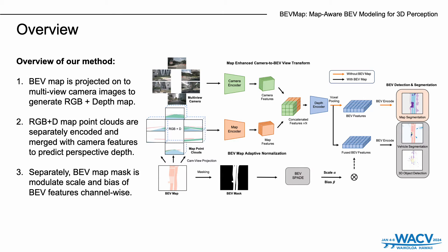We introduce the overview of our method. First, we generate a bird's-eye-view map for every sample scene, which is projected onto the perspective view to generate RGB plus depth volumes of the map. These RGB plus map point clouds are separately encoded and merged with camera features to predict perspective depth. After voxel pooling, BEV features from perspective view are generated, and we use the BEVMAP mask to modulate the scale and bias of BEV feature channels to enforce road context information.